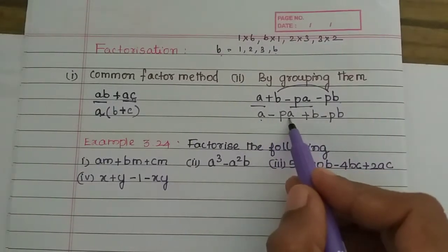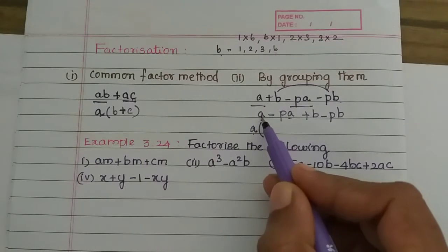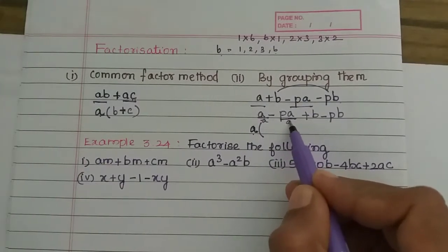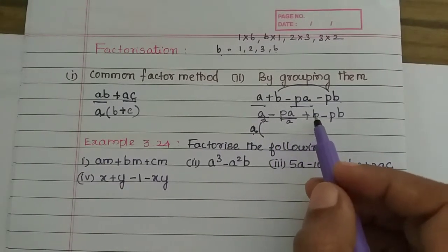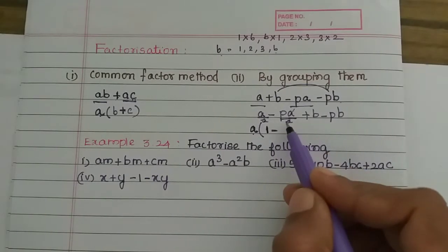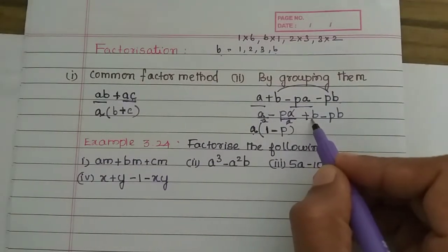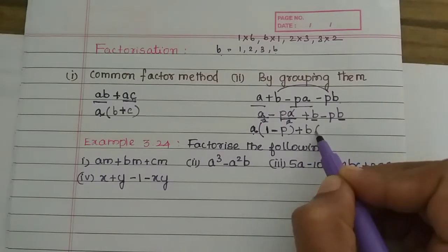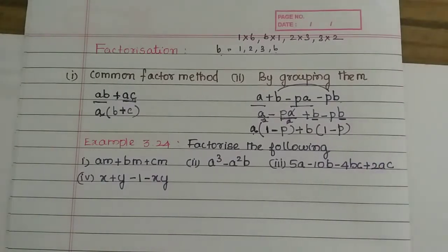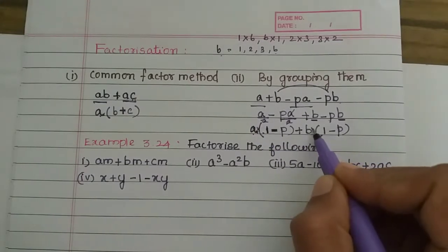Now in these two terms, A is common. So we take A as common. A divided by A is 1. If we take out A, then A cancels. Then we have B remaining. In the other group, there is B. So this becomes 1 minus B for one group and B for the other. So the two terms give us: A into (1 minus B) and B into (1 minus B).